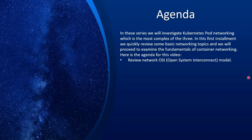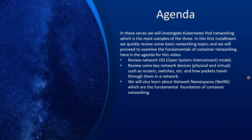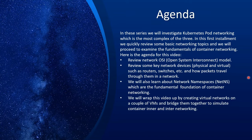Some basic understanding of networking is required, and that is why I'll start with a review of the OSI model — kind of the bible of everything network. You have to understand how the OSI model works before understanding anything else. Then we review some key network devices, physical and virtual, such as routers and switches, and how packets travel through those. We will then learn about network namespaces, which is fundamental for understanding container networking, since containers are the building blocks of Kubernetes pods. We will wrap this video up by creating virtual networks on a couple of VMs and bridging them together to simulate container inner and inter-networking.